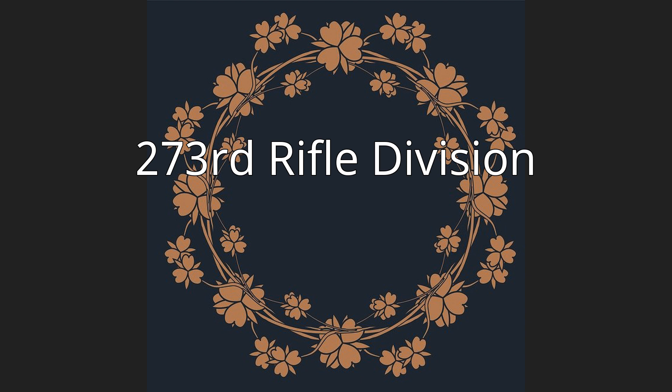273rd Rifle Division. The 273rd Rifle Division, in Russian 273 Ayastrelkovaya Divizia, was an infantry division of the Soviet Union's Red Army during World War II, formed twice.